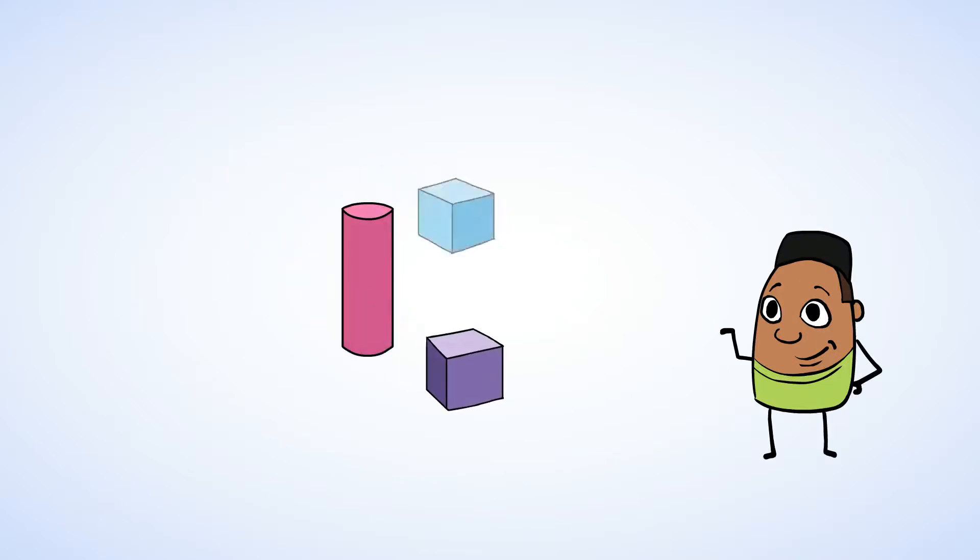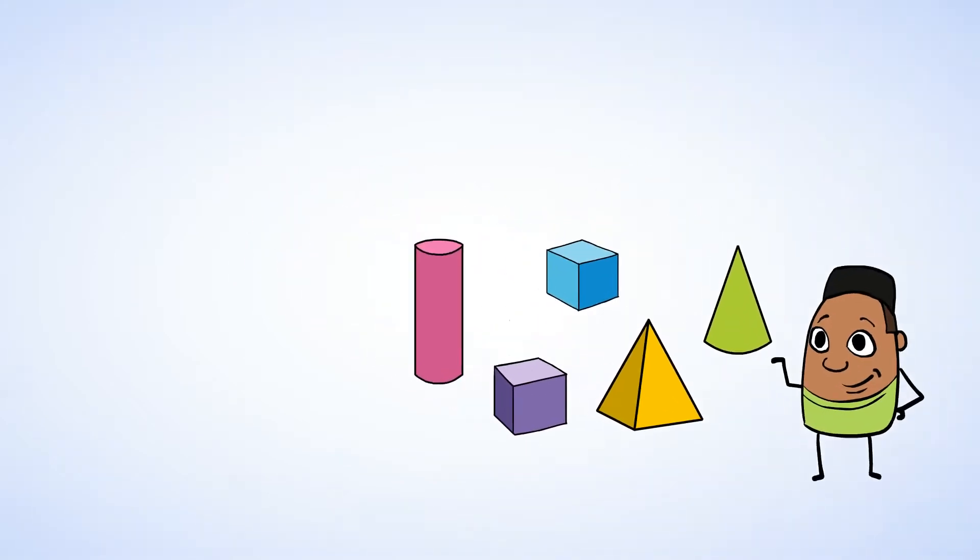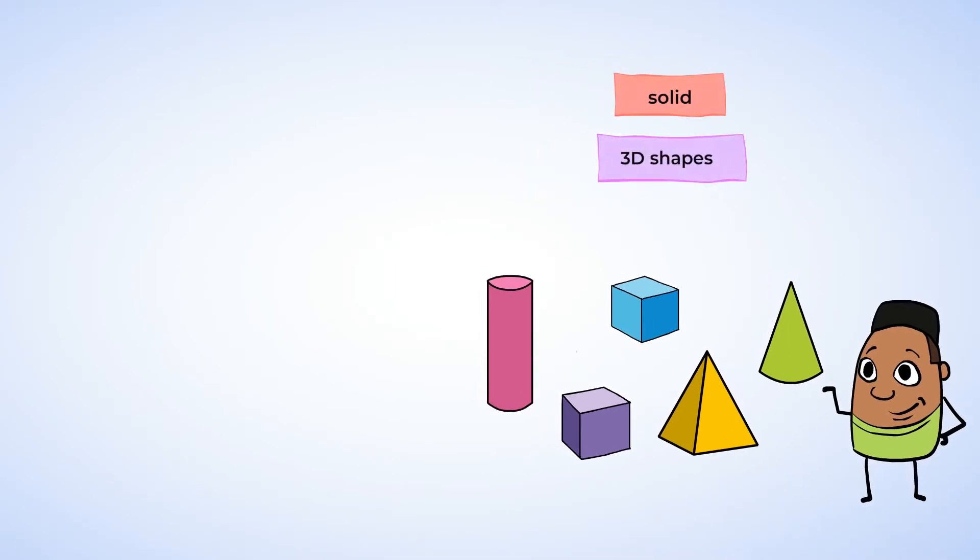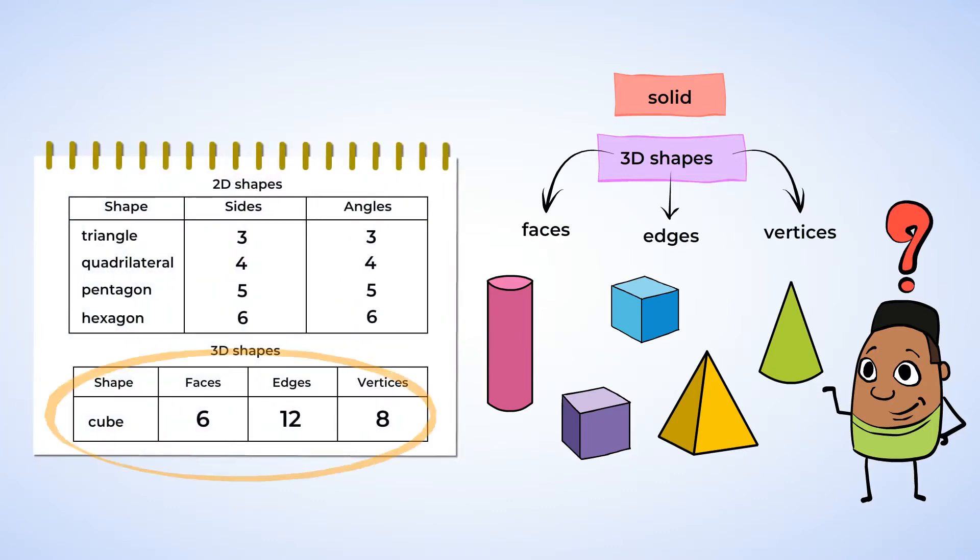Hey, while we were sorting, Will went over to play with the outdoor building blocks. These are solid 3D shapes. And that means they have faces, edges and vertices. Can you find the building blocks shaped like cubes? Remember, a cube has 6 flat faces, 12 edges and 8 vertices. Let's illustrate!